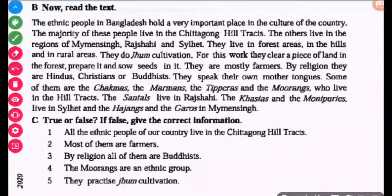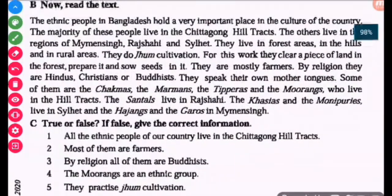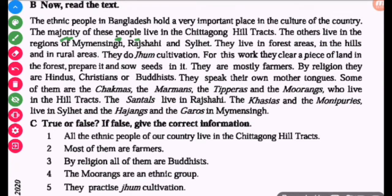The ethnic people in Bangladesh hold a very important place in the culture of the country. The majority of these people live in the Chittagong Hill Tracts. The others live in the regions of Mymensingh, Rajshahi, and Sylhet. They live in the forest areas.